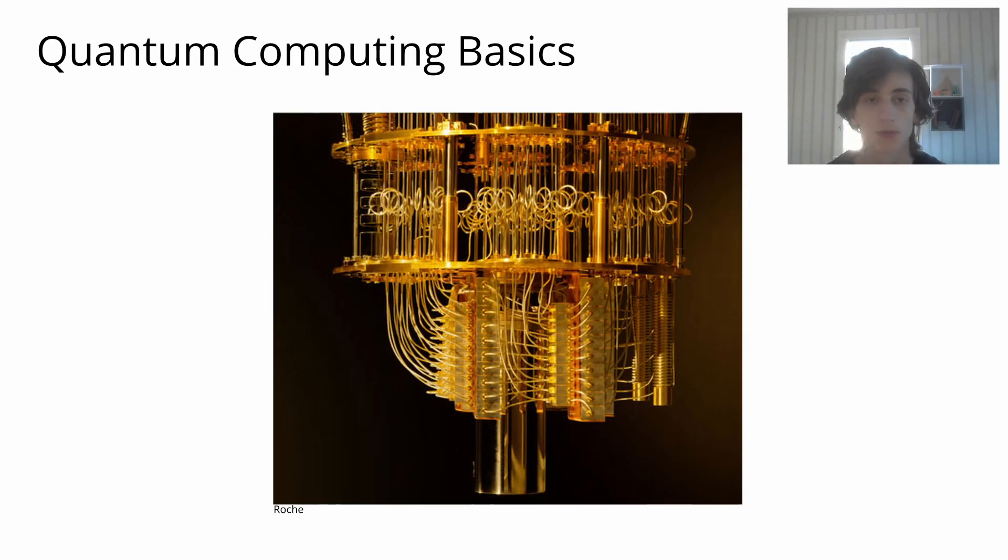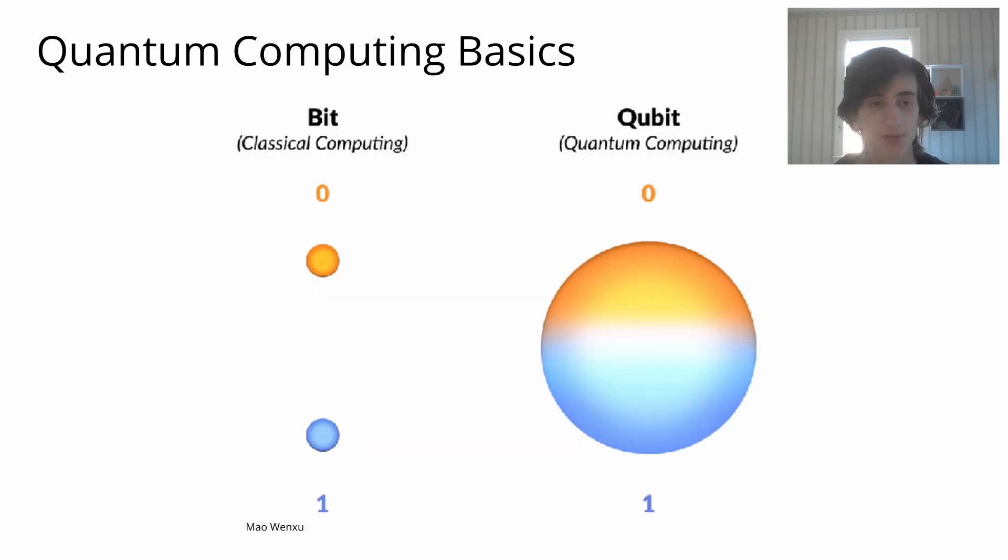Quantum computers have some special properties that give them an advantage and sometimes even complete supremacy over classical computers. Superposition is one of these properties. Although measuring or observing a qubit will always result in a 1 or 0 just like classical bits, before being measured a qubit can be in superposition. This means it can represent a mix of both 1 and 0 at the same time by having different probabilities of being measured as either 1 or 0. Something that classical bits can't do.